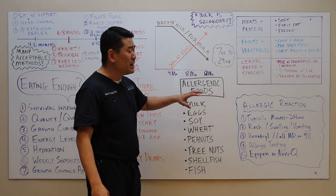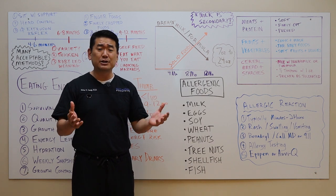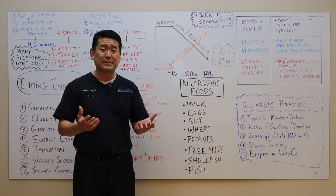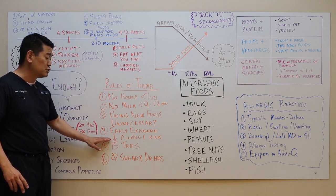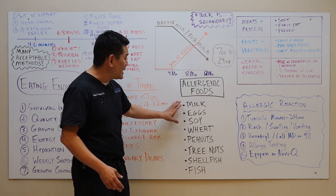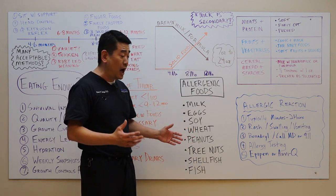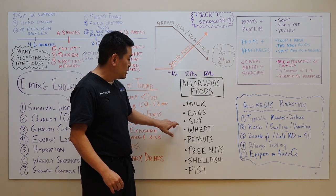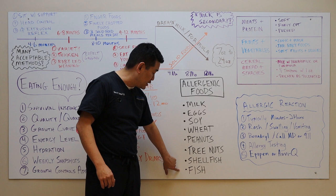So allergenic foods. One of the big things that parents are worried about are allergies. And rightly so, because food allergies can be scary. But again, I want to stress that if you expose kids to foods early in life, you can help reduce the risk of food allergies. These are some of the most highly allergenic foods. And these are the foods that you really want to introduce early on. Milk, eggs, soy, wheat, peanuts, tree nuts, shellfish, and fish.